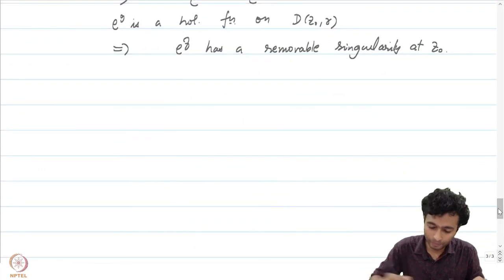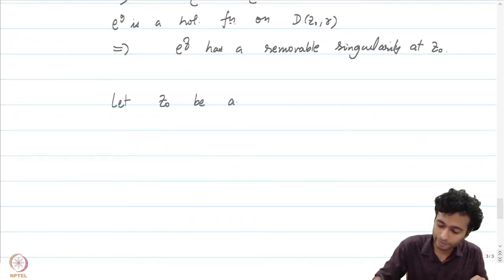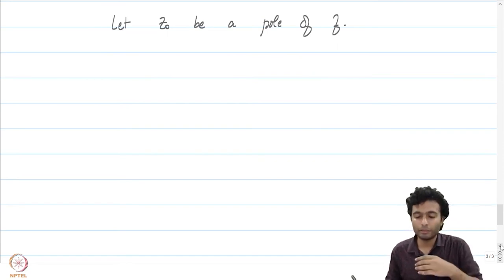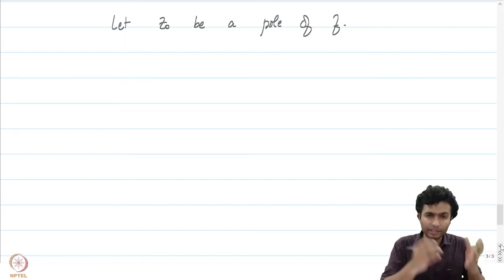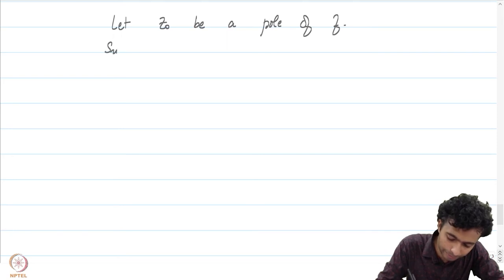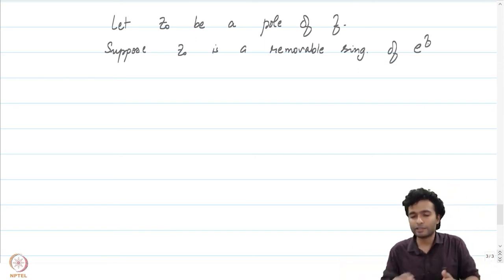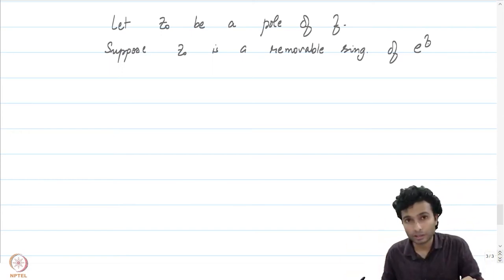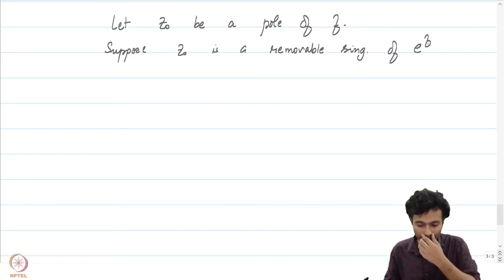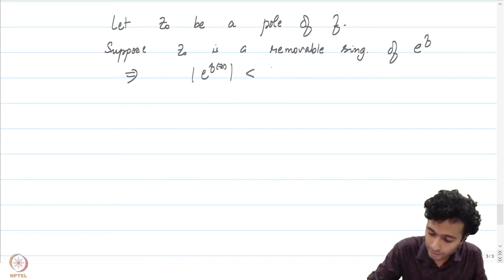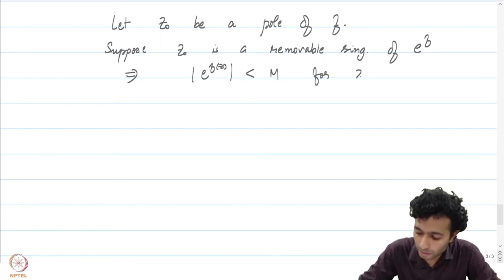Now let us consider the case when z₀ is a pole of f. We will show that z₀ cannot be a removable singularity or a pole of e^f. Suppose z₀ is a removable singularity of e^f. That means |e^{f(z)}| < M for some M on D(z₀, r) minus {z₀}. Since |e^w| = e^{Re(w)}, this means e^{Re(f(z))} < M, and by taking the logarithm, the real part of f(z) is less than some M′ for all z in D(z₀, r) minus {z₀}.